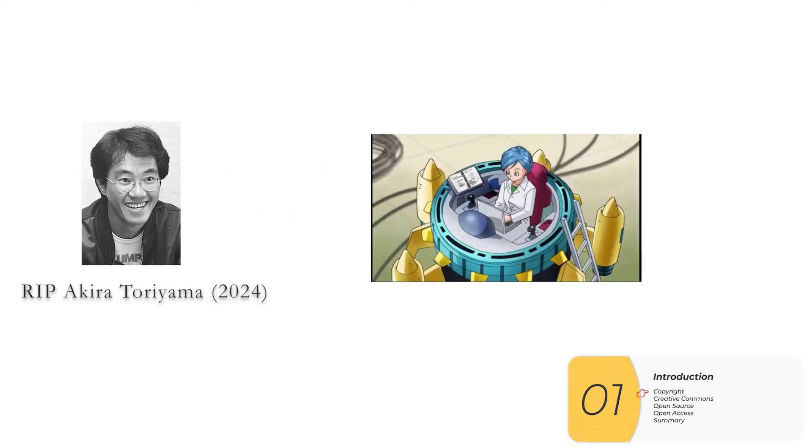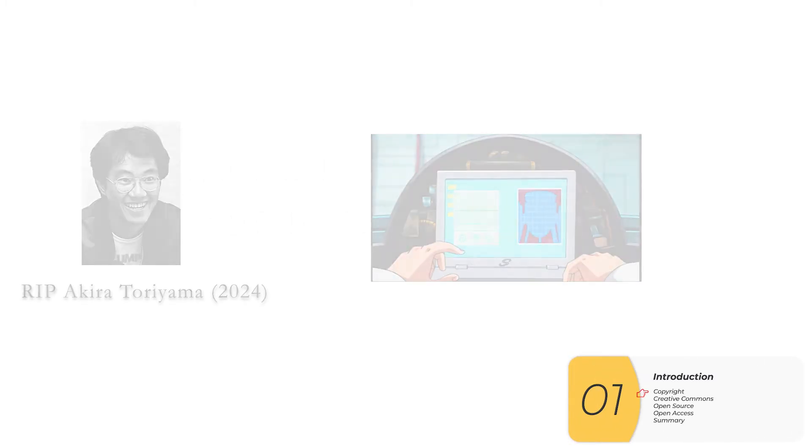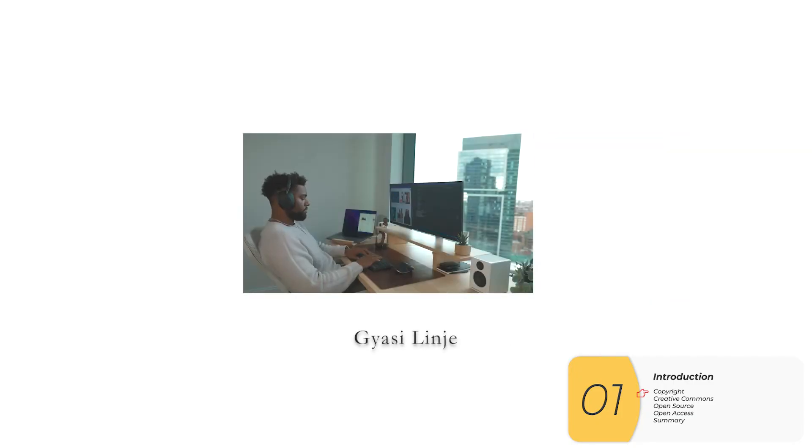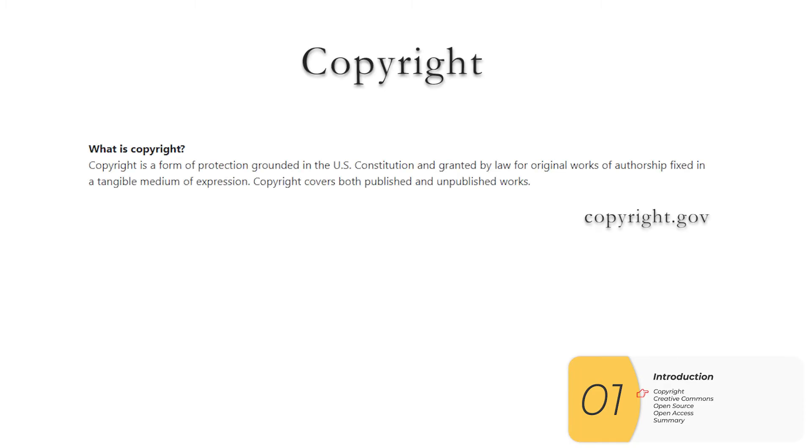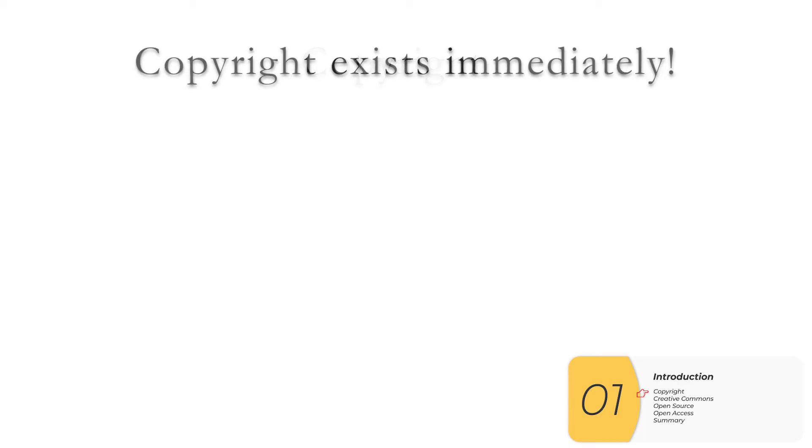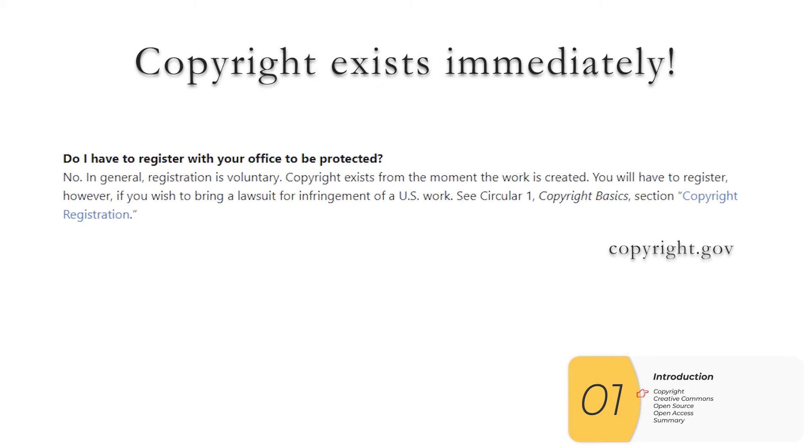So whenever artists create - it could be animating something, it could be writing music, or it could even be writing code or writing software - that work is protected by copyright, which is protection for these works under United States law. Copyright exists right away, whether or not you file for copyright. And this is a common misconception. Although if you want to sue somebody for breaking your copyright, you do have to register.